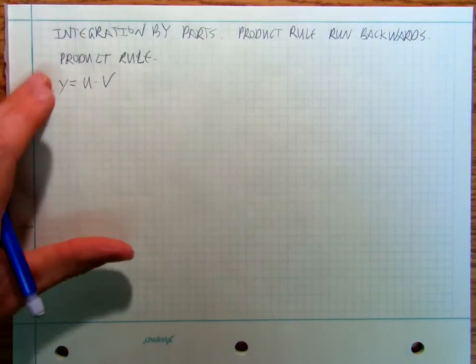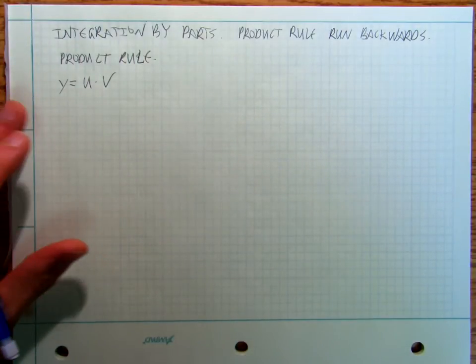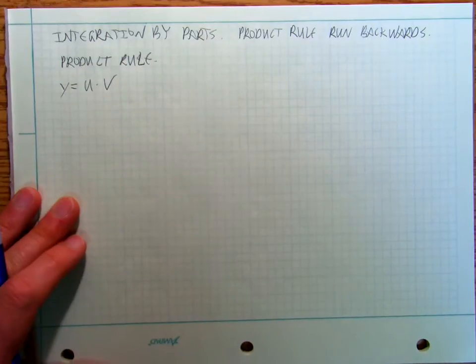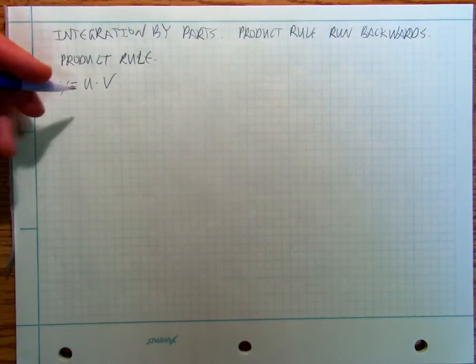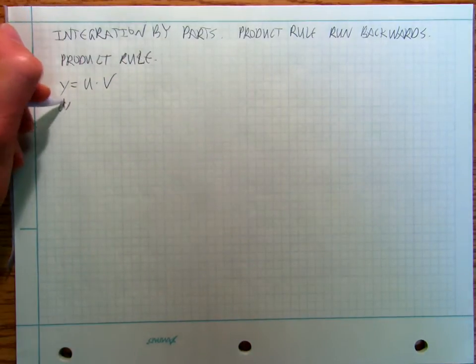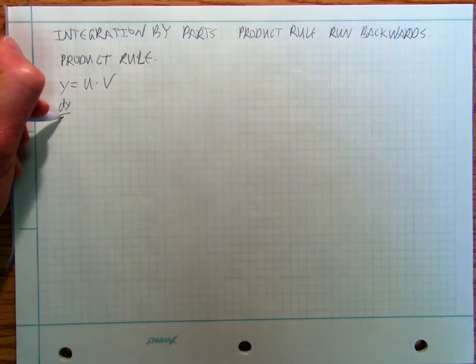And so we're going to look at this sort of theoretically and you can go back and watch my videos on product rule. And so we're going to say y equals u times v and we're going to say that dy dx,